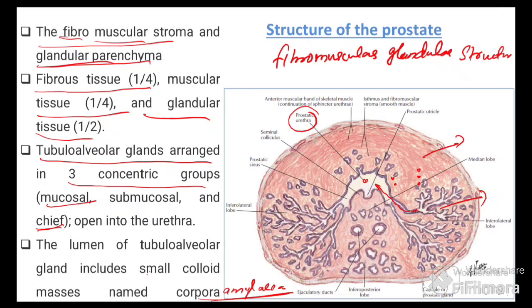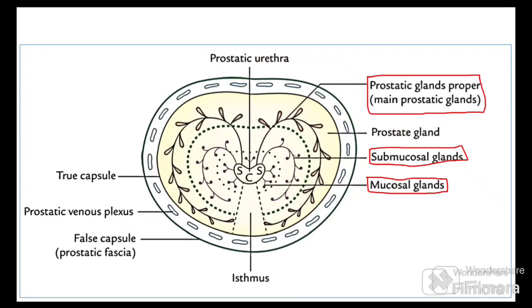Diagrammatically, around the prostatic urethra we have the mucosal glands; outer to these are the submucosal glands; and at the periphery are the major prostatic glands. All are tubuloalveolar in nature and their ducts open into the prostatic urethra.